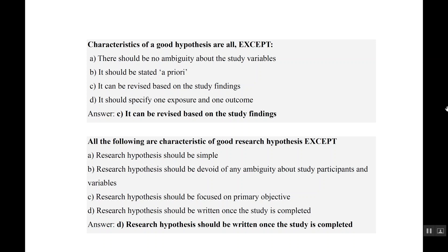All of the following are characteristics of a good research hypothesis except — it should be simple: true. Research hypothesis should be devoid of any ambiguity about study participants and variables: true, it should be specific. Research hypothesis should focus on the primary objective mainly: yes, that is also true. And it should be written once the study is completed: no, it should be stated in advance before the study has even started.